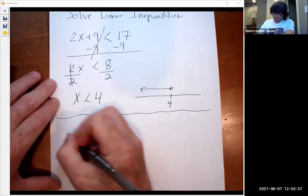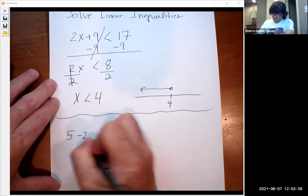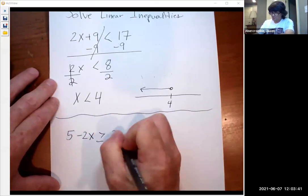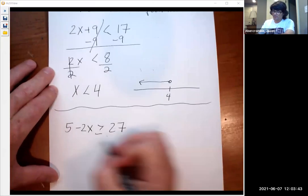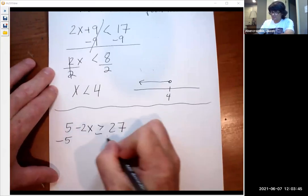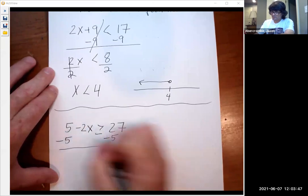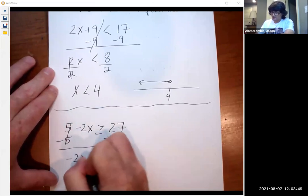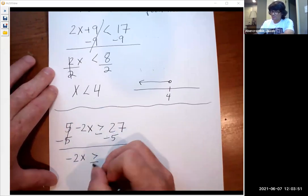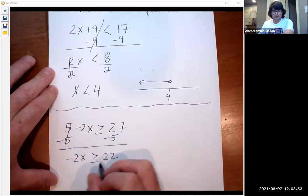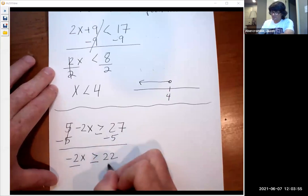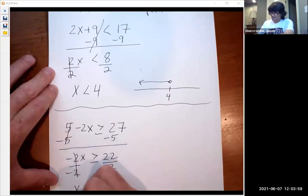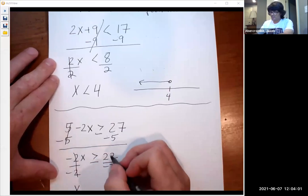If I have 5 minus 2x bigger than 27, take away 5 from both sides, cancel that out. Minus 2x is bigger than or equal to 22. That means or equal to. This time, we're going to divide by negative 2. And you get x. 22 over negative 2 is negative 11.